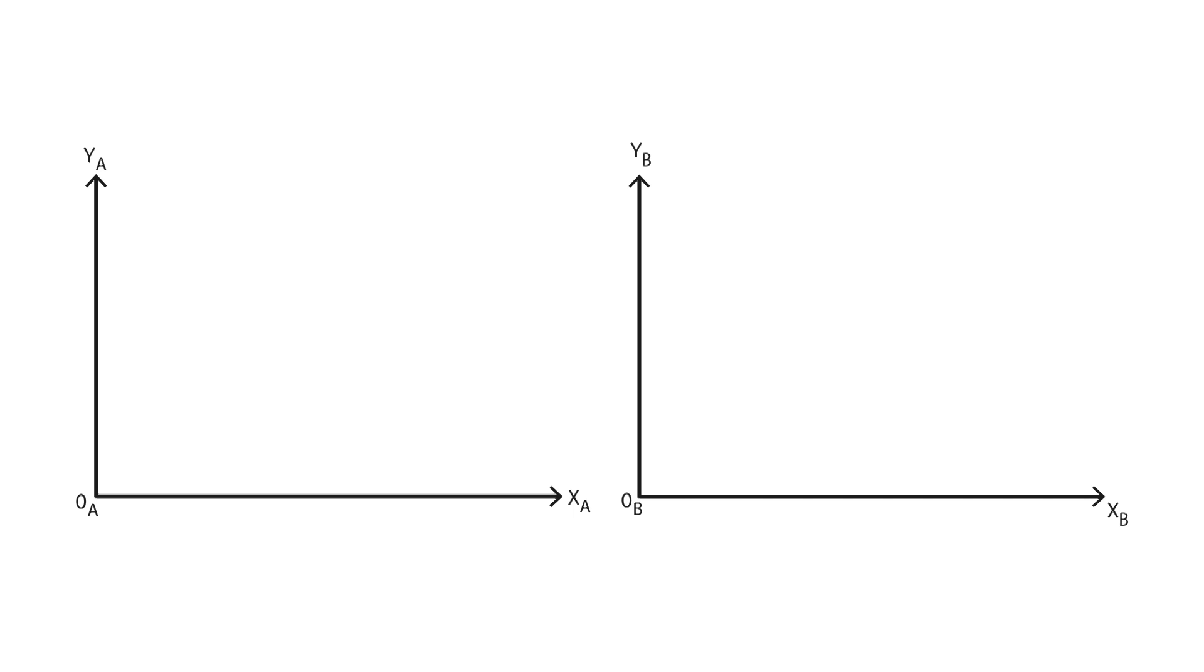Let's use a couple of diagrams to better understand how to build an Edgeworth box. These two diagrams represent the consumption patterns of two individuals, A on the left and B on the right. The x-axis or horizontal axis shows the amount of good X consumed, while the y-axis or vertical axis shows the amount of good Y consumed.